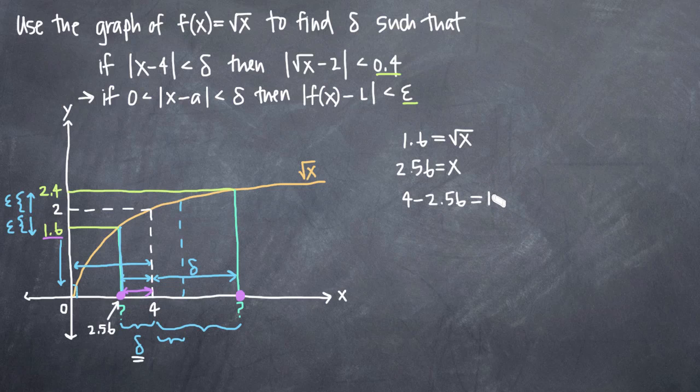And when we do that arithmetic, we get 1.44. So what that tells us is that delta must be less than or equal to 1.44.